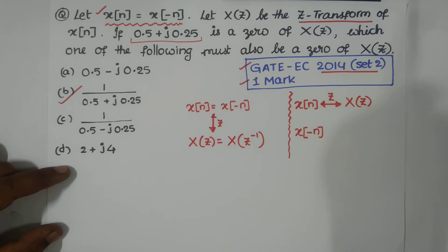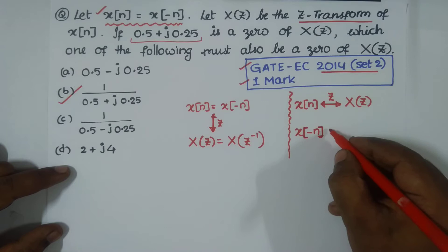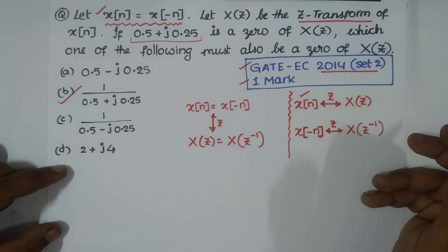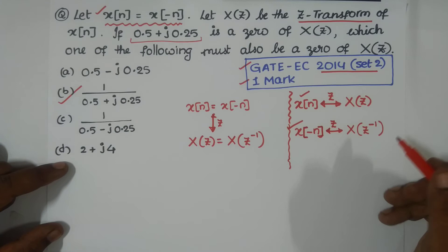X[-n] is a folded version of the time domain sequence. Folding in the time domain is inversion in the Z domain, so X(Z^-1). We can also prove it, but for now accept this.